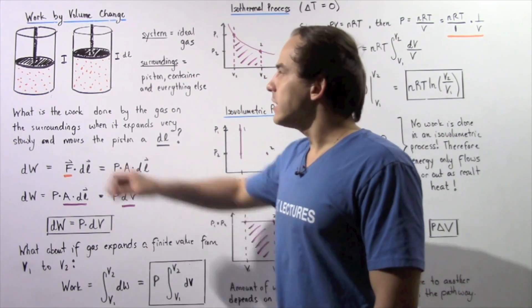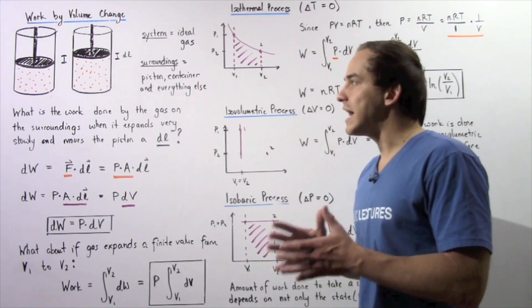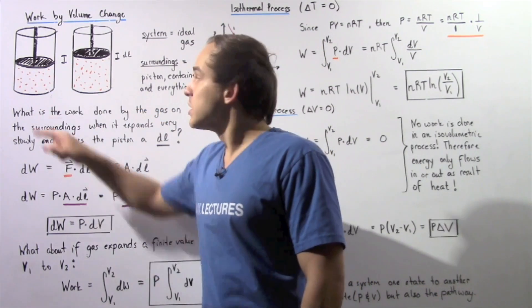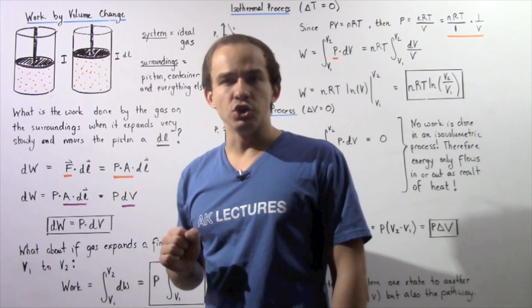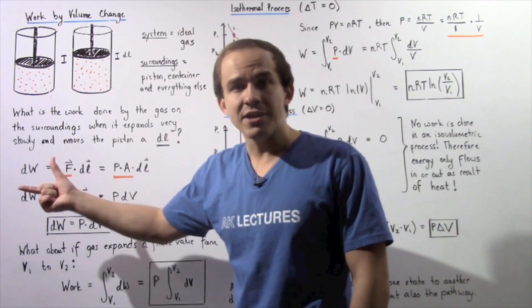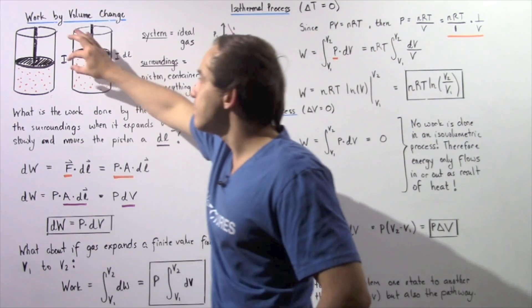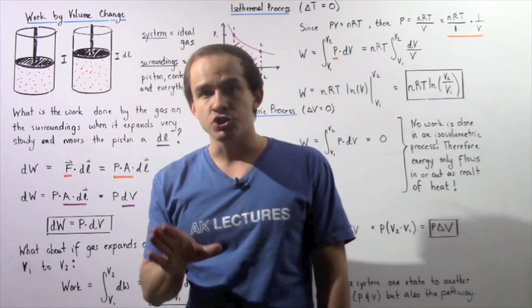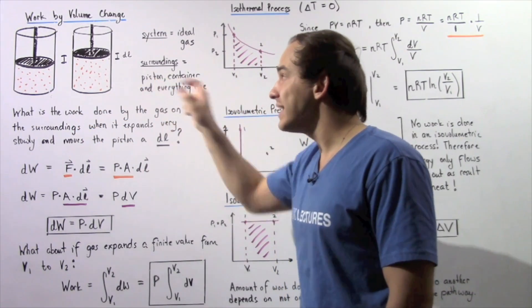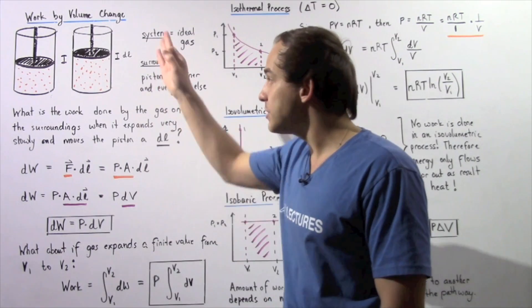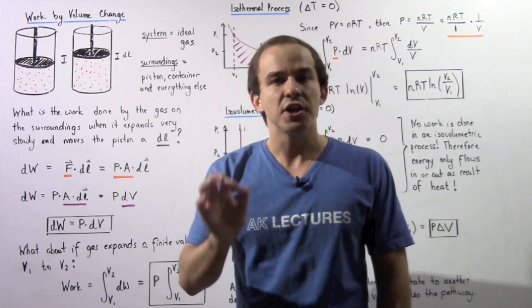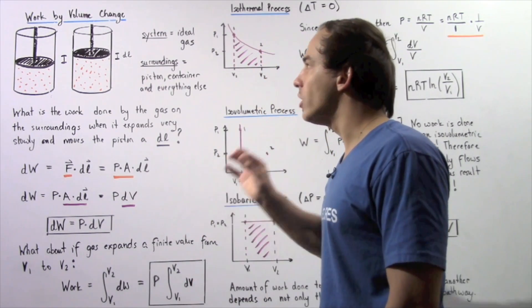Let's begin by looking at the following system. Suppose we have a system of ideal gas molecules, shown by the orange dots. The surroundings include the piston, the container, and everything else. We have a movable piston, and we want to calculate the work done by the ideal gas on the surroundings — on the piston, the container, and everything else — when the gas expands very slowly an infinitely small distance dl.